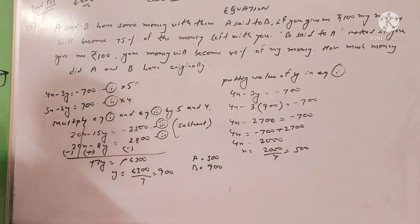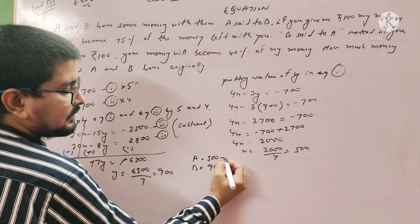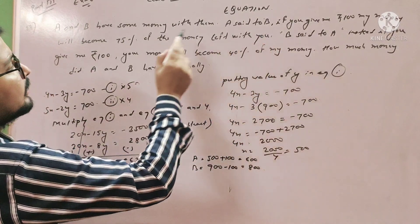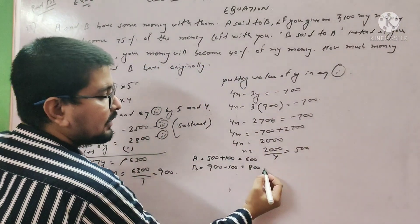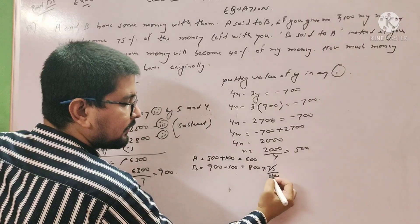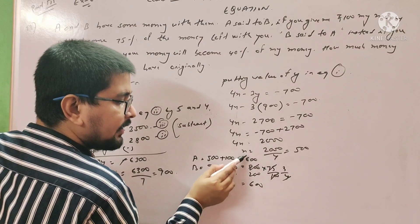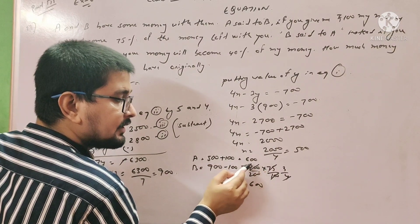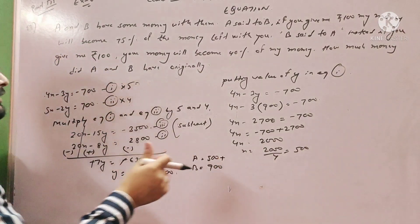Let's verify: A has 500 and B has 900. If B gives A 100 rupees, A has 600 and B has 800. Is 600 equal to 75% of 800? 75% of 800 is 3 by 4 times 800, which is 600. Yes, 600 equals 600, so the answer is correct. A has 500 rupees and B has 900 rupees.